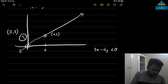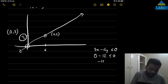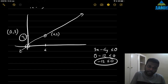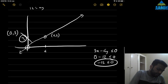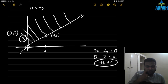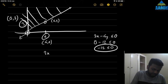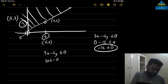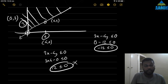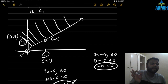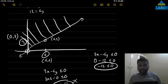For point 0 comma 3: 3 times 0 minus 4 times 3 gives minus 12, and minus 12 is less than or equal to 0 — that is correct! So the area is on that side. If we check 4 comma 0: 3 times 4 minus 0 is 12, and 12 is less than or equal to 0 is obviously wrong. So the area is above the line in this case.